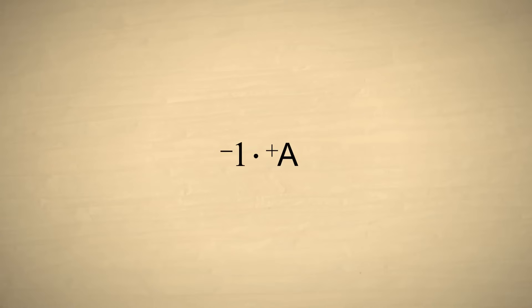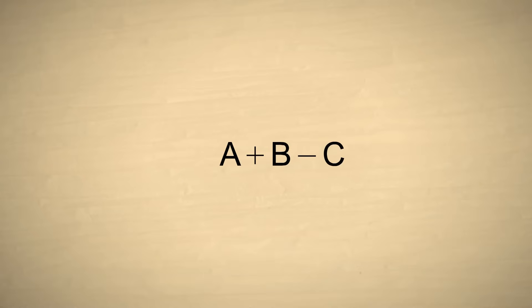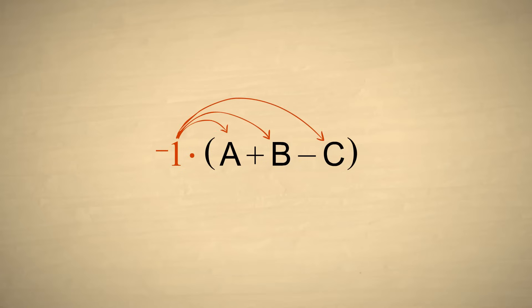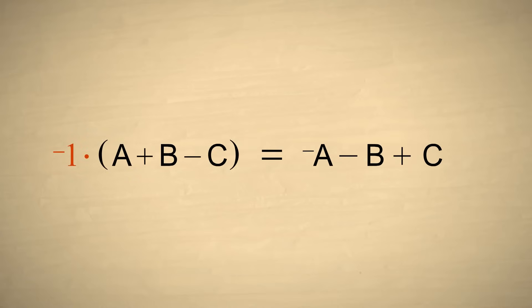Here is another interesting trick which can come in handy. Multiplying any positive number, which we will call A, by negative one switches its sign to negative. Likewise, multiplying any negative number by negative one will switch its sign to positive. Now let's say that we have a sum of several numbers of various signs. If we enclose the sum in parentheses and multiply by negative one, the distributive property says that this is the same as multiplying each number individually by negative one, which switches the sign of each number. So multiplying a sum of numbers in parentheses by negative one switches the sign of each number.